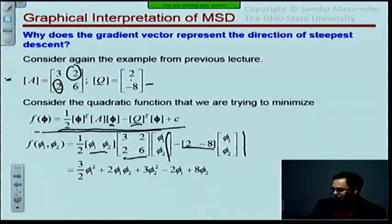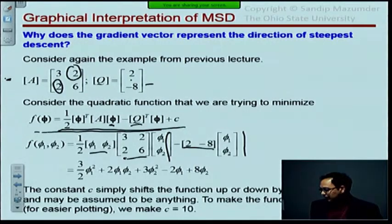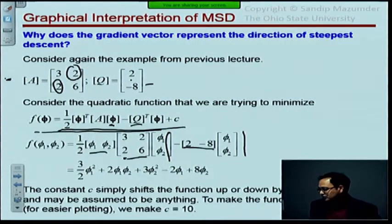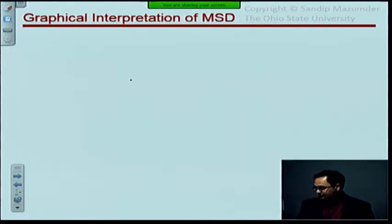You can choose any C for plotting purposes. I've used C so that the function shifts up or down, and in this case it's chosen such that you get the minima of the function is 0, the value of the function. So now what we are doing here is we are saying in the method of steepest descent we are going to follow the gradient of this function f.